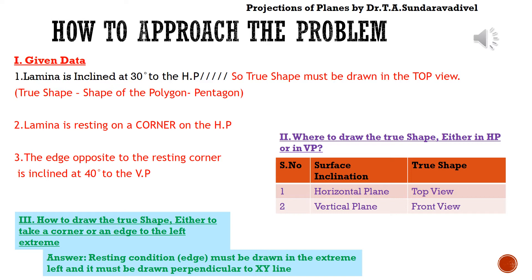If we make any mistake in these two conditions, the total problem will be wrong. If a lamina is inclined to HP, we draw the true shape in the top view. If inclined to VP, we draw it in the front view. In our problem, the lamina is inclined to HP, so the true shape is drawn in the top view. Since the lamina is resting on a corner, I am going to take a corner to the left.